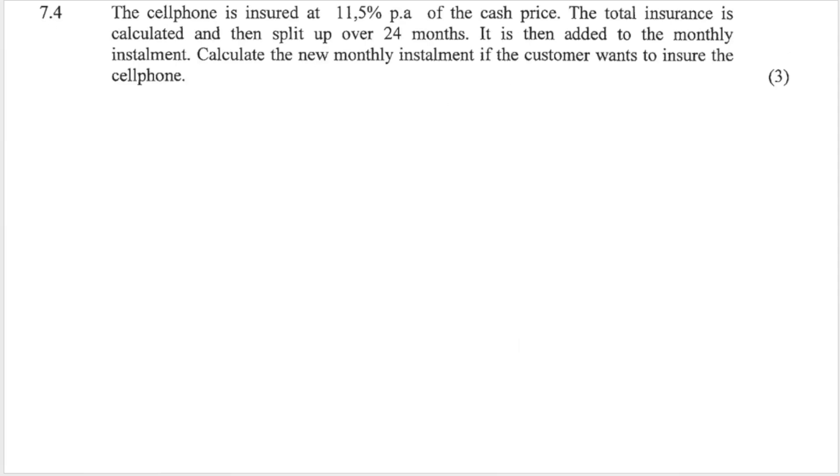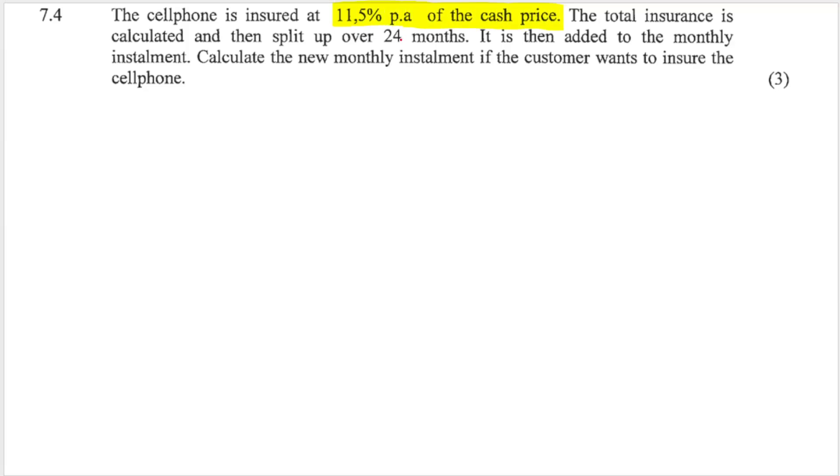Our next question, 7.4, says we are going to insure the cell phone. And it says we're going to insure it at 11.5% PA of the cash price. Now, PA, remember, means per annum, per year. The sentence is very important. I'll come back to it in a second. It says the total insurance is then calculated. They split it up over the 24 months. Remember, that's the total period. It is then added to the monthly installment.